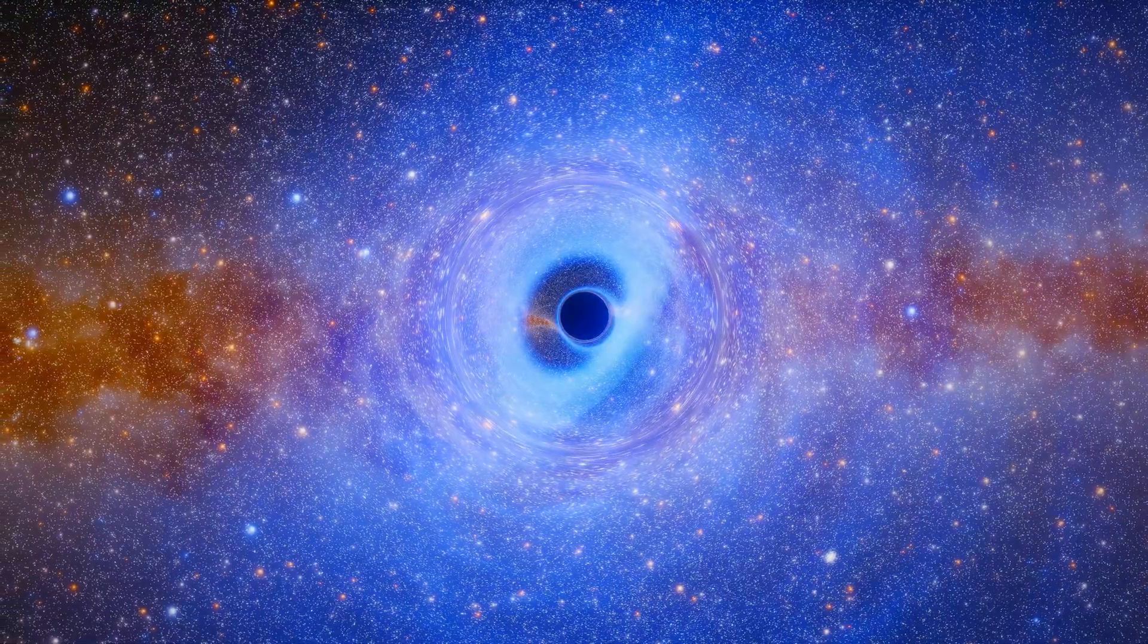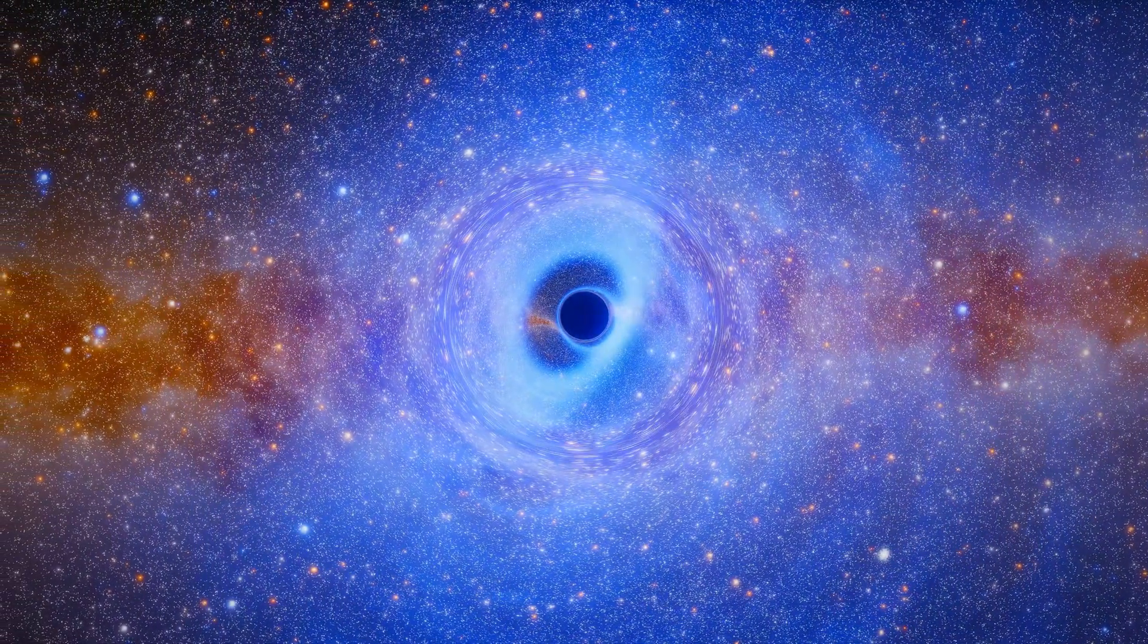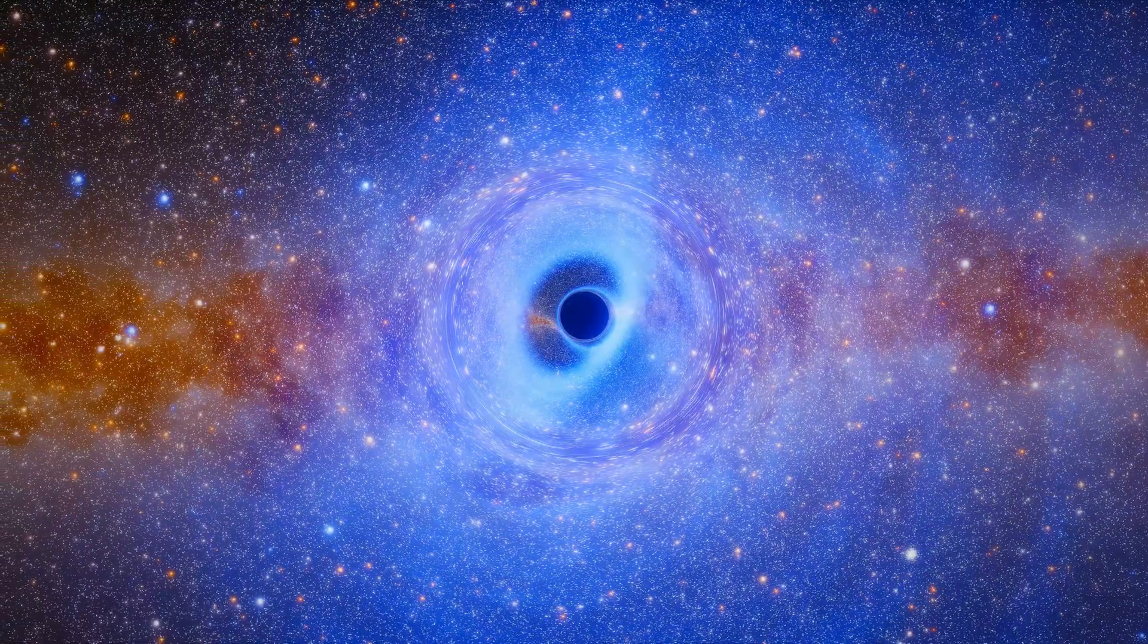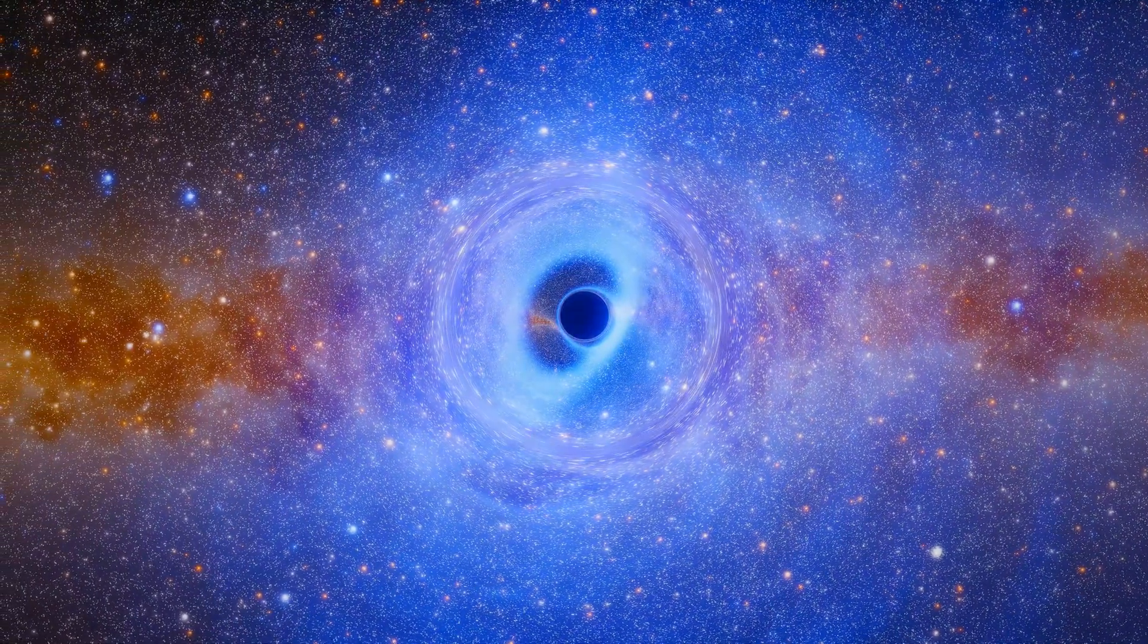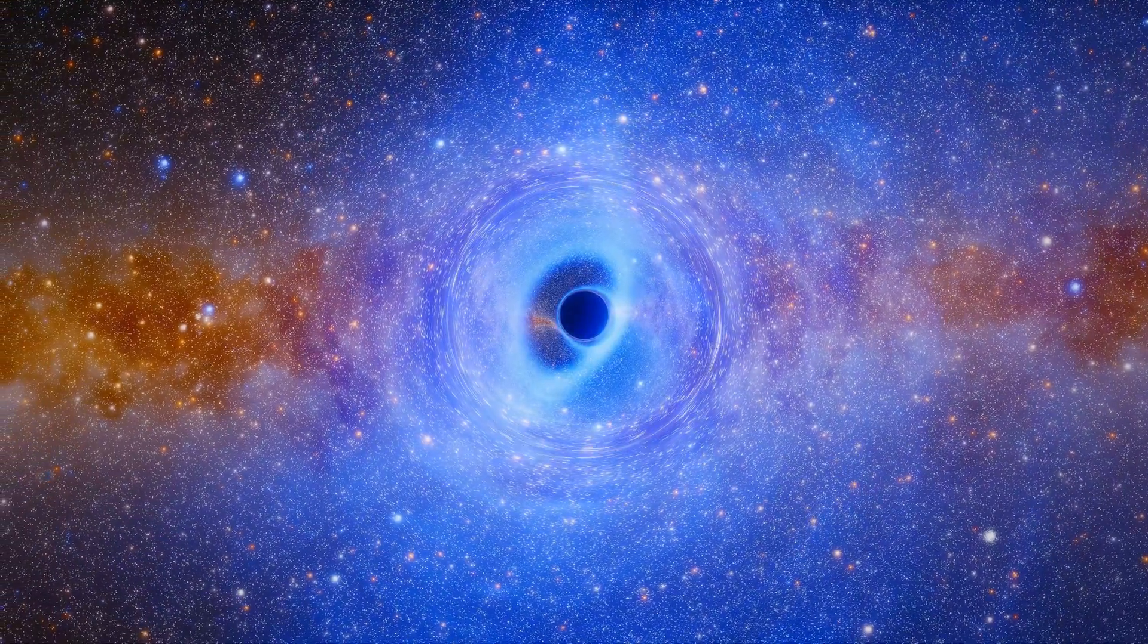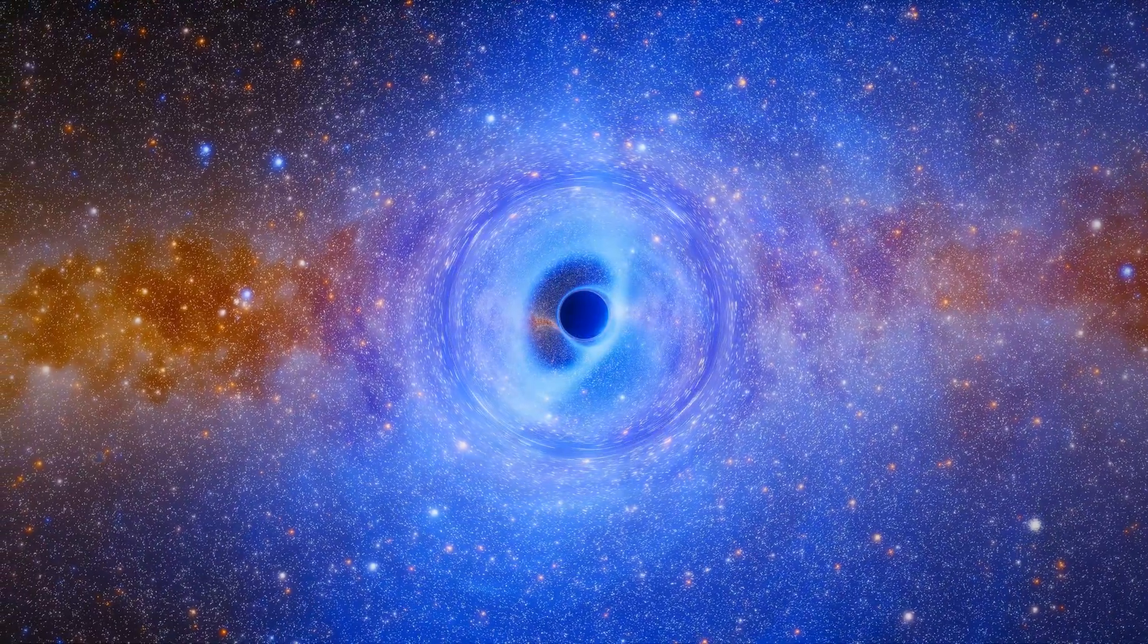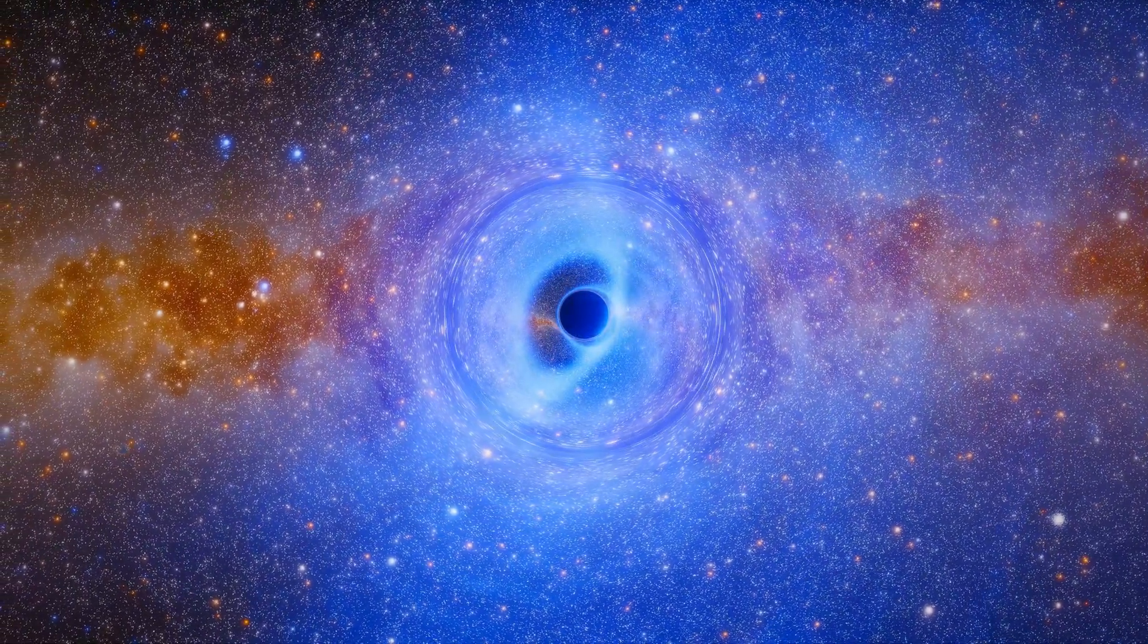The event horizon, the point of no return, is about twelve million kilometers across. Roughly seven and a half million miles. You could fit the entire thing inside Mercury's orbit around the sun. Four million times the mass of our sun packed into that small space.